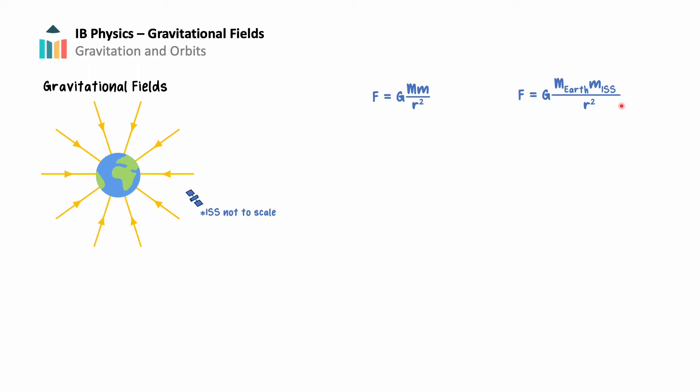F is the gravitational force between those two masses, or according to Newton's third law, the force of the Earth on the ISS, as well as the force of the ISS on Earth. We also have the equation g equals F divided by m, where g is the gravitational field strength, F is the force in Newtons, and m is the mass of the object in the gravitational field. Note that the units for gravitational field strength are Newtons per kilogram.